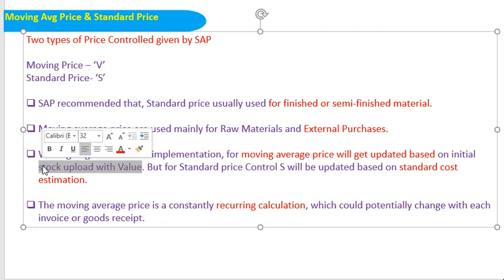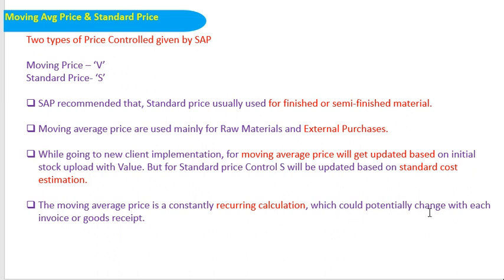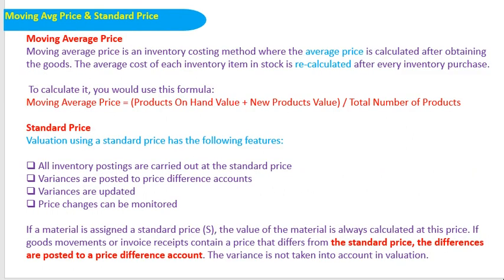Moving average price is a constantly recurring calculation, which could potentially change with each invoice and goods receipt. Here is the formula for moving average price: Moving Average Price = (Products on Hand Value + New Products Value) / Total Number of Products. Whatever products you had earlier — that value — plus the new products you recently purchased, divided by the total number of products, gives you the moving average price.